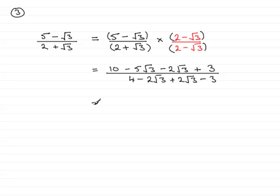Tidying this up, on the top we have the 10 and the 3, which is 13. And then minus 5 root 3 minus another 2 root 3 is going to be minus 7 root 3. And all this is divided by, well, 4 minus 3 is 1. And you'll notice minus 2 root 3 and 2 root 3 here cancel one another out to give us 0.